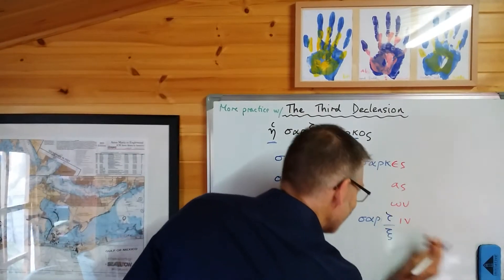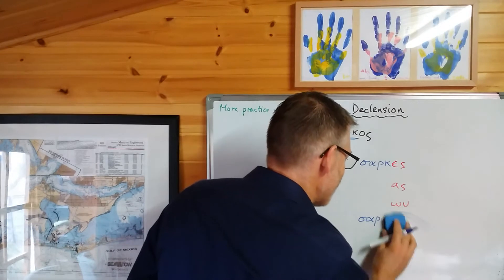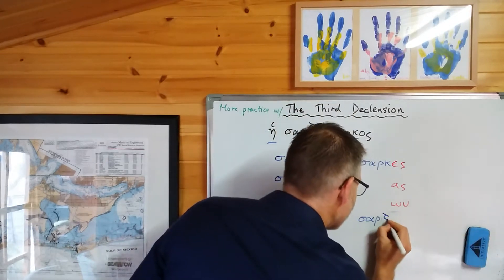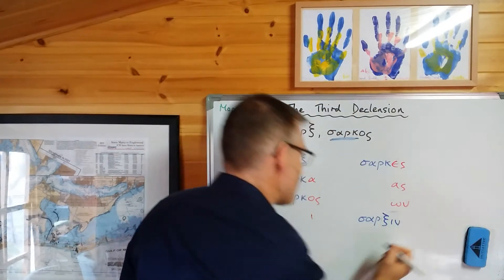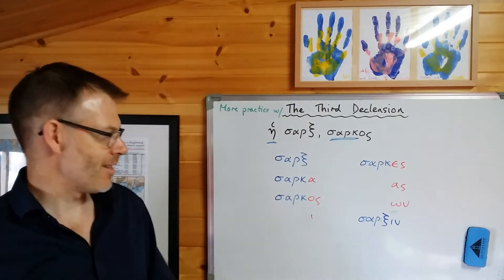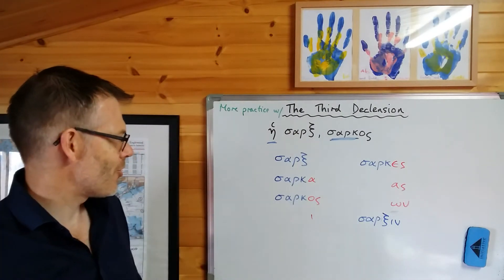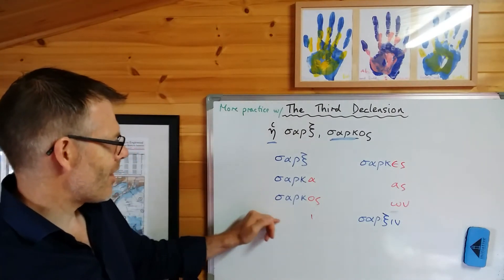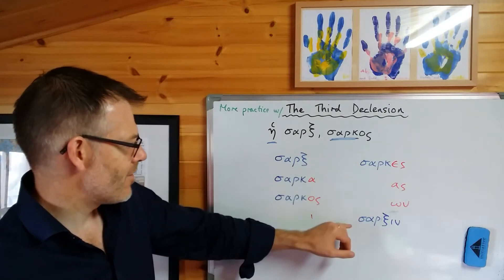And so, oh dear, I'm going to get rid of that because that's otherwise going to be really messy. Here's how it goes: sarksin. Sorry about the wonky writing, you can cope with that I'm sure. Sarks, sarka, sarkos, sarki, sarkes, sarkas, sarkōn, sarksin.